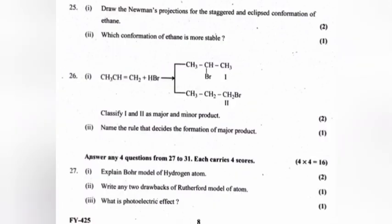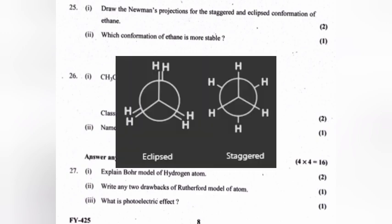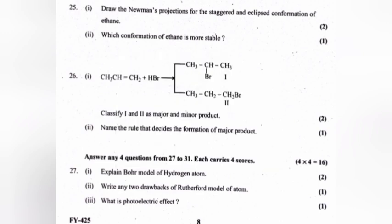Draw Newman's projection for the staggered and eclipsed conformation of ethane. Which conformation of ethane is more stable? Staggered conformation is more stable than eclipsed conformation.